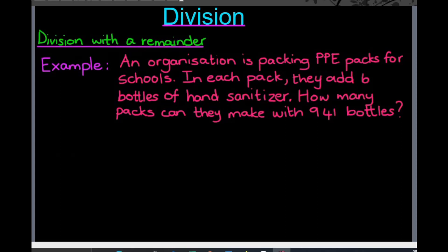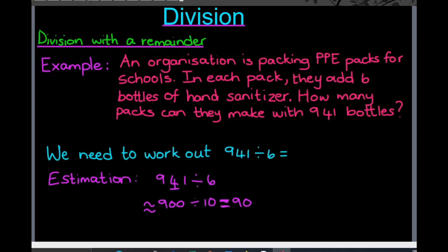The first thing we need to do is find out what is our number sentence — what are we actually working at. There are 941 bottles and we need to know how many packs they can make if there are six in each pack. So it's 941 divided by six.